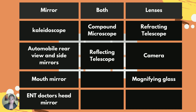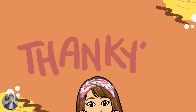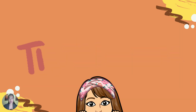To wrap it up, here is a list of applications of mirrors and lenses. For mirrors: kaleidoscope, automobile rear-view and side mirrors, mouth mirror, and ENT doctor head mirror. For lenses: camera, refracting telescope, and magnifying glass. For both mirrors and lenses: compound microscope and reflecting telescope. I hope you learned something new today. Thank you for watching this video.